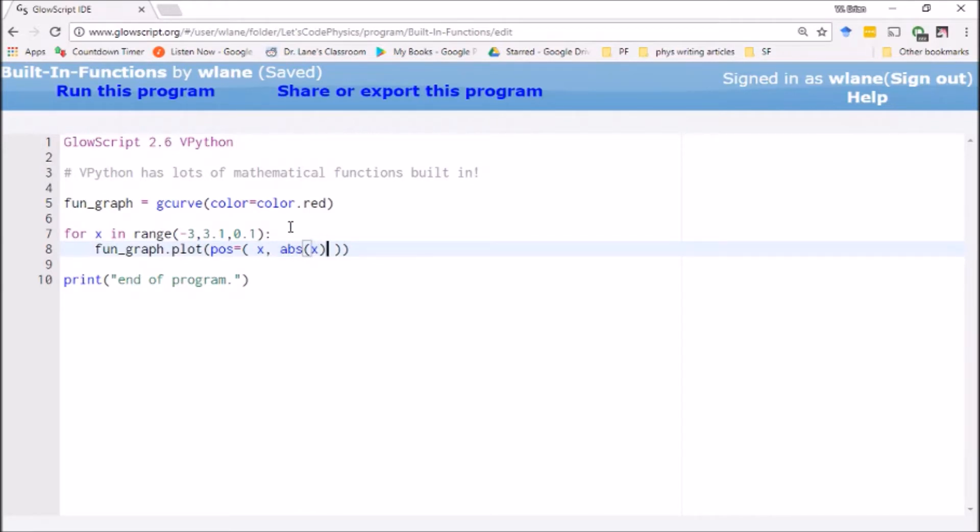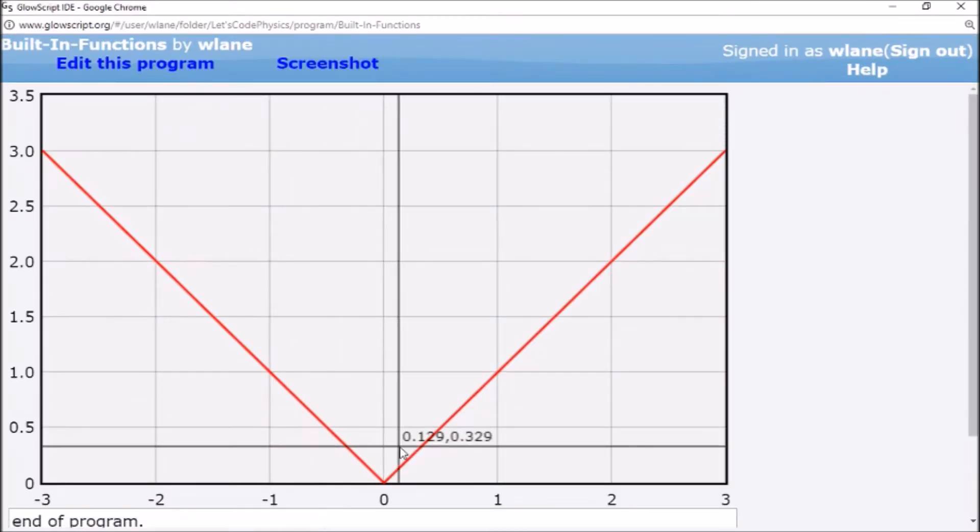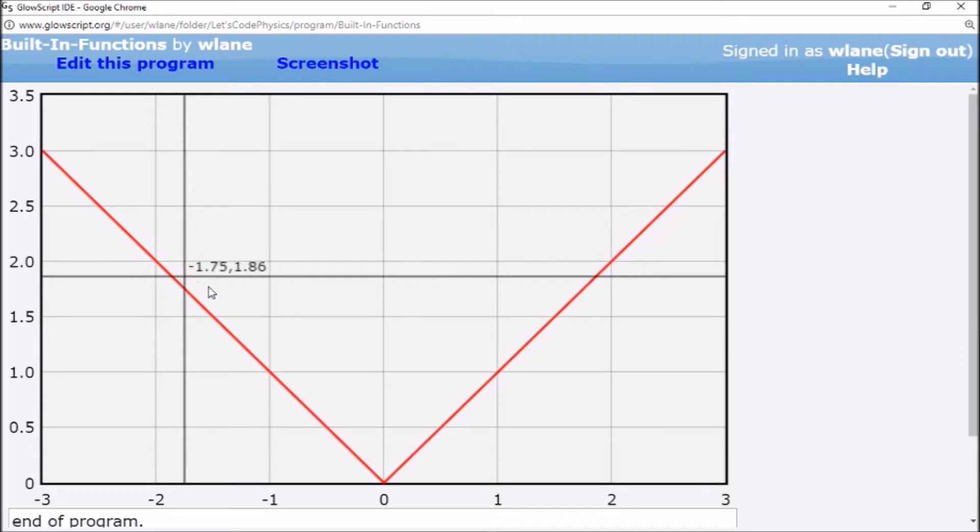The first function we're going to examine is the absolute value function. This is a pretty well-known function. It's the function that returns the positive version or the non-negative version of whatever number you input. So everything to the right of 0, it just returns the same number. So the absolute value of 2 is 2. But everything to the left, it returns the opposite. So the absolute value of negative 2 is 2. Absolute value of negative 1.5 is 1.5.